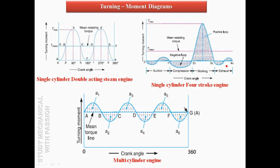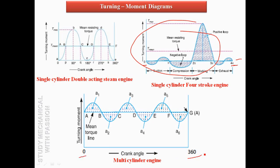For a multi-cylinder engine, the torque variation is more uniform. With 4 cylinders the complete rotation is smoother — there are overlapping power strokes. We write the mean torque line for the multi-cylinder case from 0 to 360 degrees.